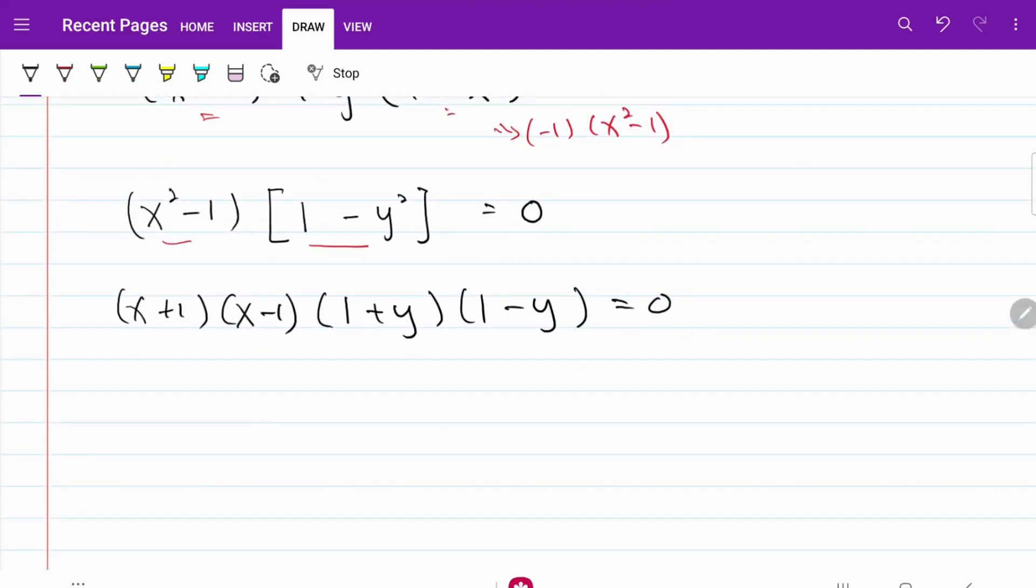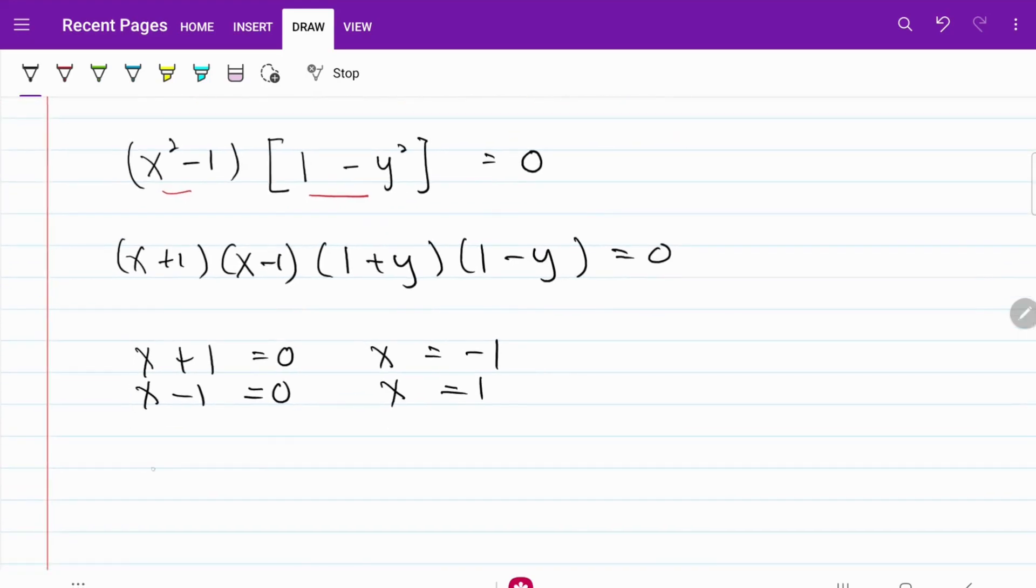From here, each of the brackets will be equal to 0. So I have x plus 1 equal to 0, x is equal to negative 1. x minus 1 equal to 0, x is equal to 1. Likewise, y plus 1 equal to 0, y equal to negative 1, y minus 1 equal to 0, y is equal to positive 1.